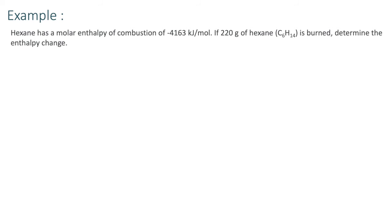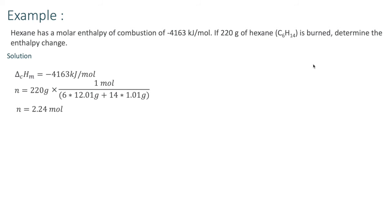Let's look at an example. Hexane has a molar enthalpy of combustion of negative 4,163 kilojoules per mole, and if we have 220 grams of hexane being burned, we're asked to determine the enthalpy change. We write down what we know: the molar enthalpy of combustion is denoted by subscript CM. We must calculate N by finding the molar mass of hexane — 6 carbons and 14 hydrogens — giving us 2.24 moles.